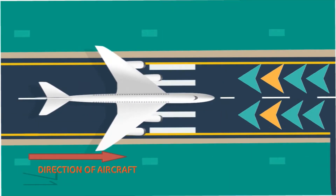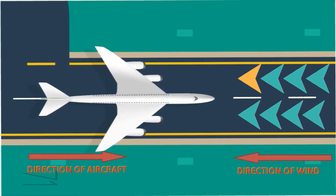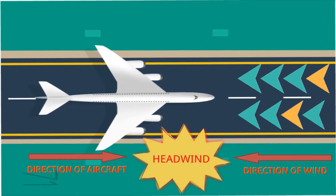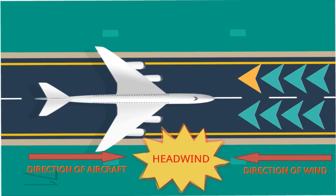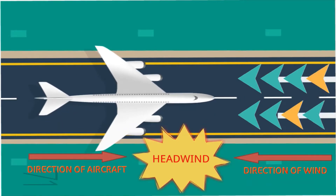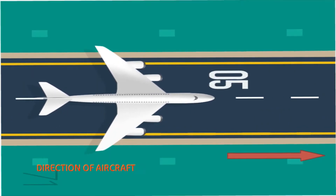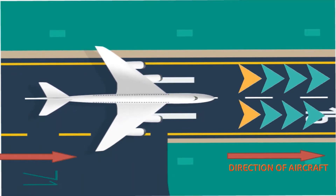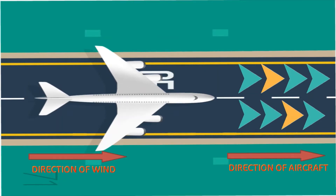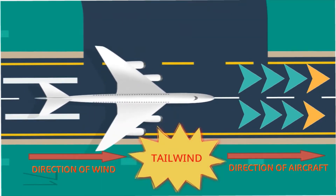If the direction of the aircraft movement and the direction of the wind are opposite to each other, the condition is known as headwind, because the wind is coming onto the head of the aircraft. If the direction of aircraft movement and the direction of wind are both the same, then the condition is known as tailwind.